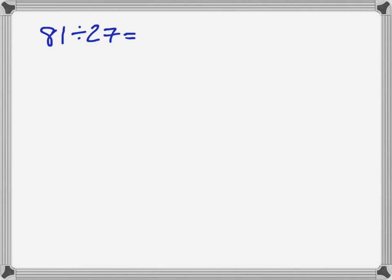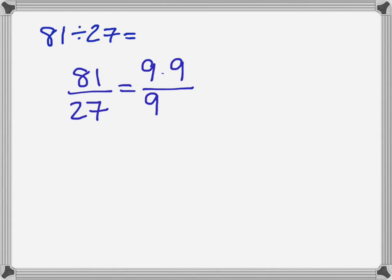Another use of the identity property is to make division problems easier. If you look at 81 divided by 27, you might not know the answer without a calculator. But you can use the identity property to simplify this. The fraction bar is another way of writing a division problem, so 81 divided by 27 is really the same as 81 over 27. We can apply the identity property and divide by a common factor: 81 is 9 times 9, and 27 is 9 times 3, so this is really 9 over 9 times 9 over 3.